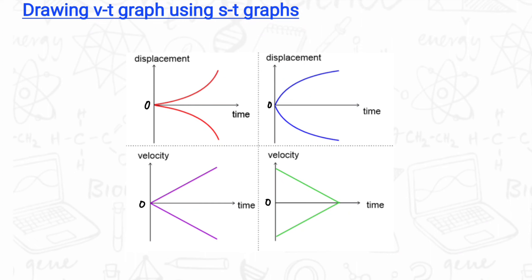The next thing we should know is how to draw VT graphs using ST graphs. The first graph is a displacement-time graph, and the second is the corresponding velocity-time graph. If we take the gradient of the first graph, we can see that the gradient increases; therefore, the velocity increases.